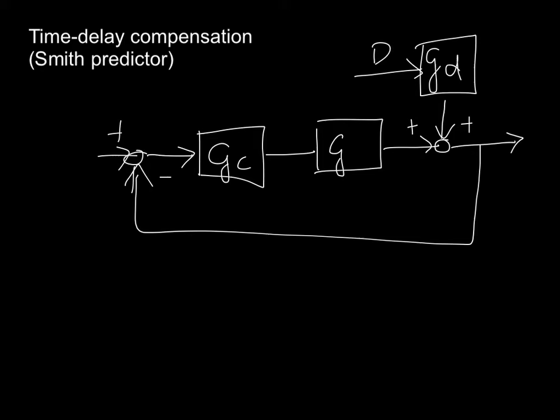We will now discuss a technique for compensating for these delays called the Smith predictor technique. I've drawn a normal feedback loop with our controller and our system in the normal position.